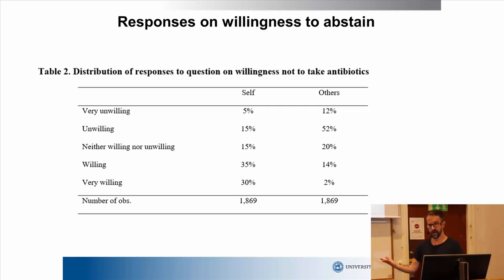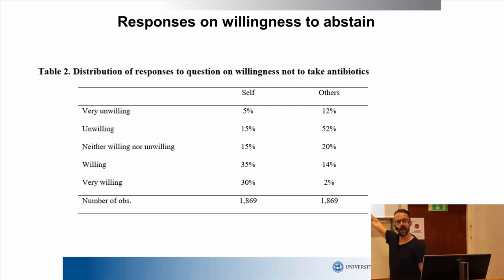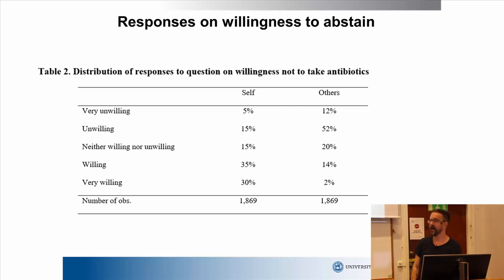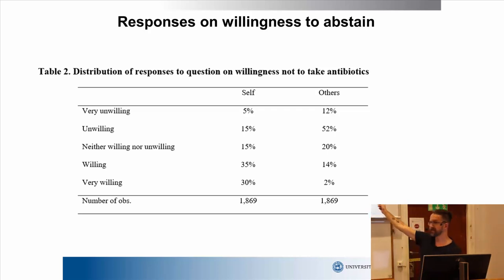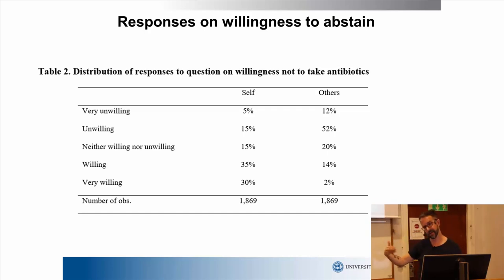This is what you usually find in many studies, and in a way I would say that the estimate about others might be a more reliable prediction of what people would actually do. But interestingly, there's also a pretty big correlation between these two responses — if I'm very willing to abstain from antibiotics, it's more likely that I think other people are at least fairly willing to abstain as well.